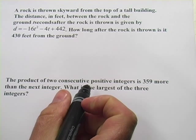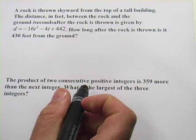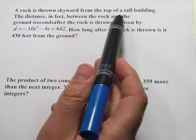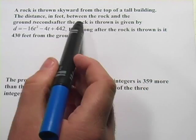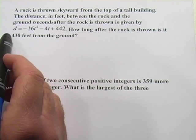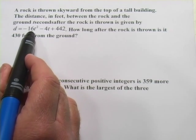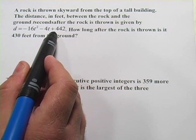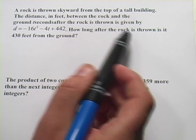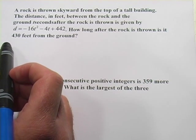Here we have some word problems that have to do with quadratic equations. The first one says, a rock is thrown skyward from the top of a tall building. The distance in feet between the rock and the ground t seconds after the rock is thrown is given by d = -16t² - 4t + 442. How long after the rock is thrown is it 430 feet from the ground?